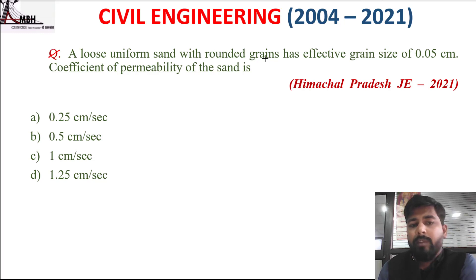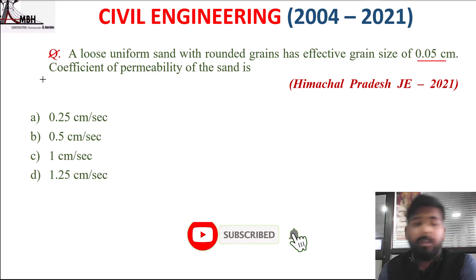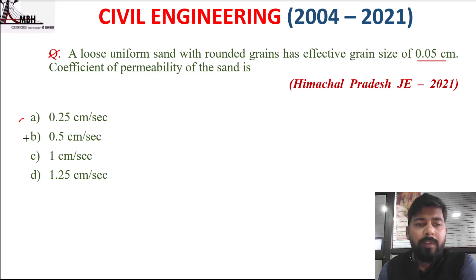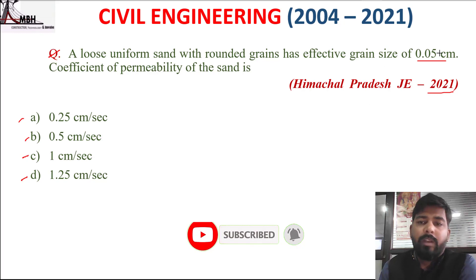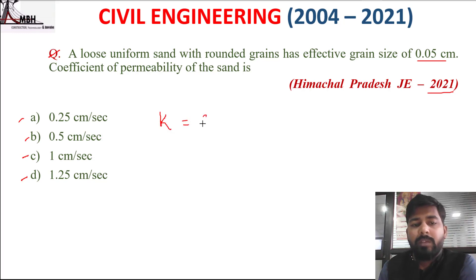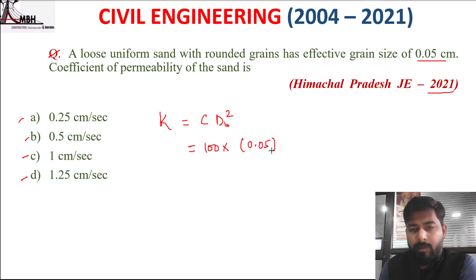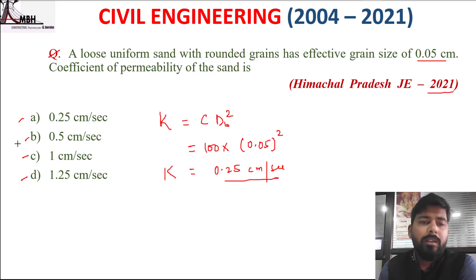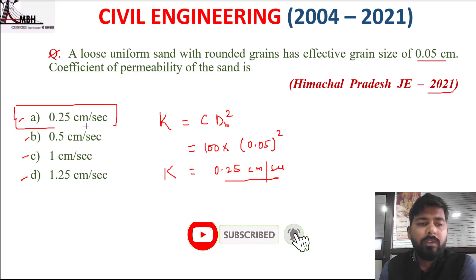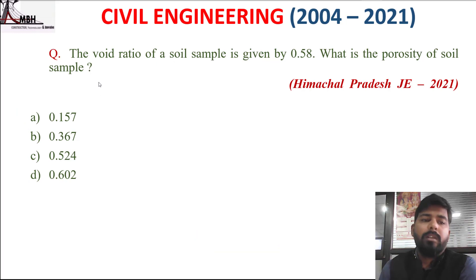The first question: a loose uniform sand with rounded grains has an effective grain size of 0.05 cm. The coefficient of permeability of the sand is: option A 0.25 cm/s, B 0.5 cm/s, C 1 cm/s, D 1.25 cm/s. The coefficient of permeability is C × D10². C is constant equal to 100 and D10 is 0.05, so 100 × (0.05)² = 0.25 cm/s. Option A is correct.